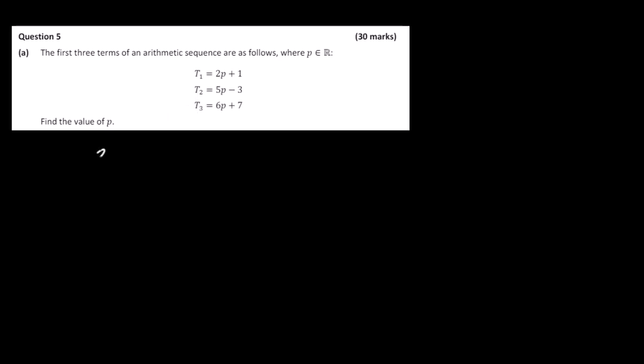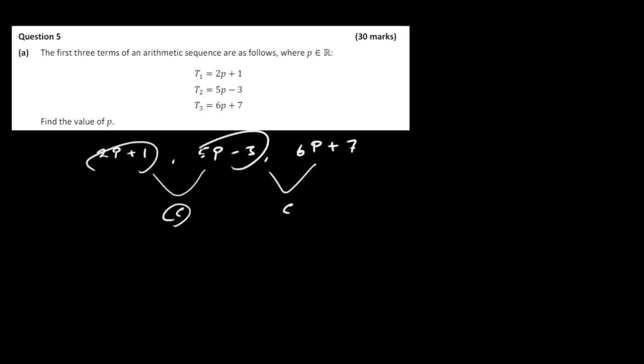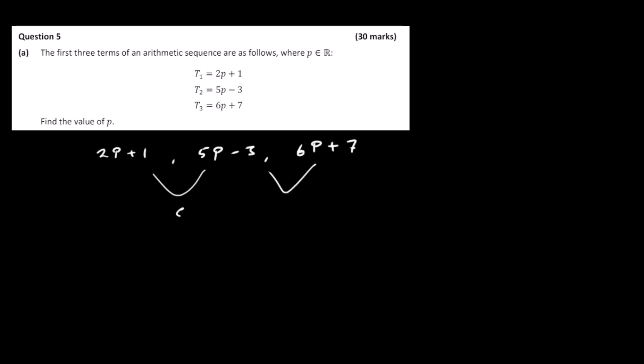If this is an arithmetic sequence, then 2P plus 1 is the first term, 5P minus 3 is the second term, and 6P plus 7 is the third term. If we subtract the first term from the second term, we should get exactly the same answer as subtracting the second term from the third term — in other words, there is a constant common difference. I'm going to use that to work out the value of P.